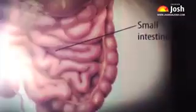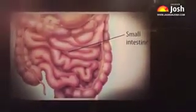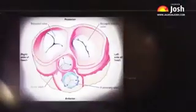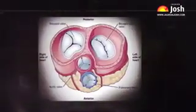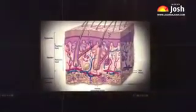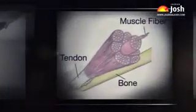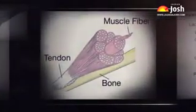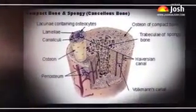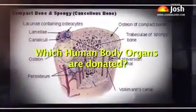Before discussing the organs that are to be donated, we will first see what organ donation is. It is the process of retrieving or procuring an organ from a living or deceased person, known as a donor. The process of recovering organs is called harvesting. This organ is then transplanted into the recipient who is in need of that organ.